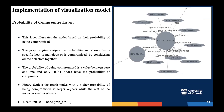Next we have the probability of compromise layer. This layer illustrates nodes based on their probability of being compromised. The probability of compromise is a value sent from the backend to the front end, and based on a formula, different sizes are assigned based on the probability of being compromised. If the probability is higher, the node size is bigger; if smaller, the node size is smaller. The probability of compromise layer is only implemented on host nodes, not on other nodes.